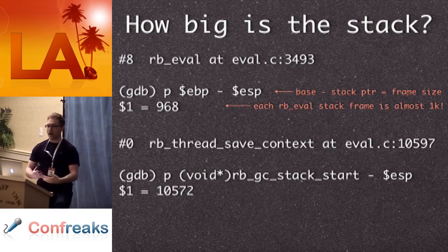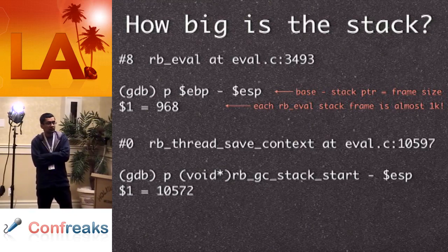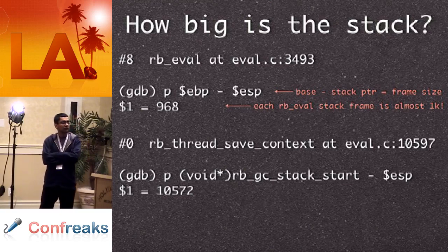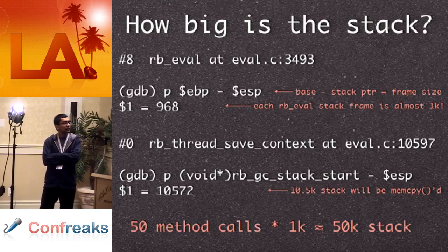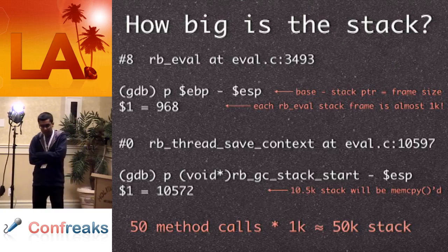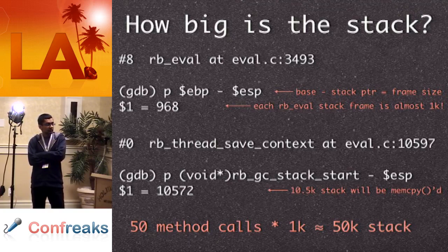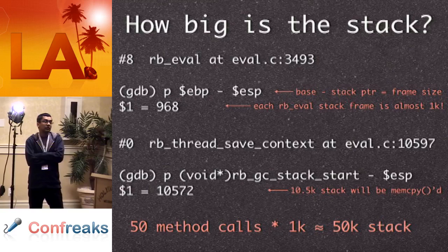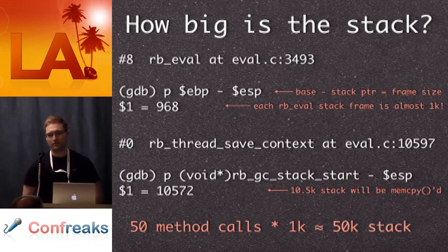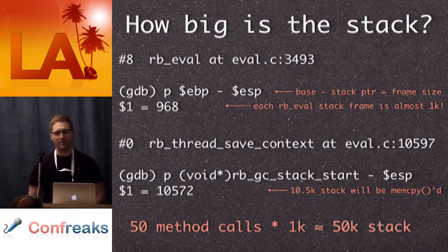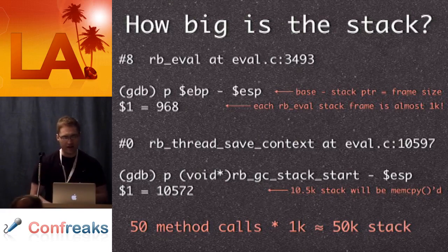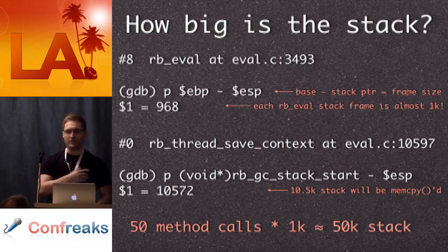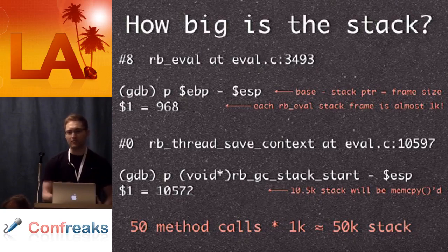To get the entire Ruby program stack size, Ruby has an internal variable rb_gc_stack_start — you subtract the current bottom of the stack from that and the Ruby stack is around 10k. If you have 50 method calls each with 1k stack frames, you end up with a 50k stack. It turns out that in Rails, you can have several hundred method calls for a single request — we're talking about a huge amount of data getting copied back and forth every time a thread switches. The threading implementation is broken — and we're going to get into how to fix it very shortly.